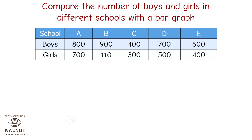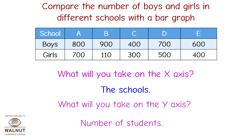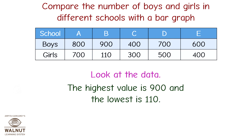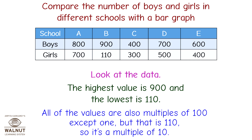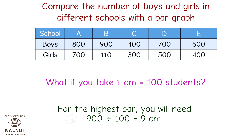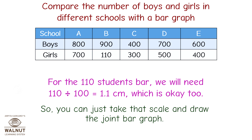Next example: compare the number of boys and girls in different schools with a bar graph. The x-axis shows the schools and the y-axis shows the number of students. The highest value is 900 and the lowest is 110. Most values are multiples of 100, and 110 is a multiple of 10. If we take 1 centimeter equal to 100 students, the highest bar needs 900 divided by 100, equal to 9 centimeters, and the 110-student bar needs 1.1 centimeters — both are okay. So take that scale and draw the joint bar graph.